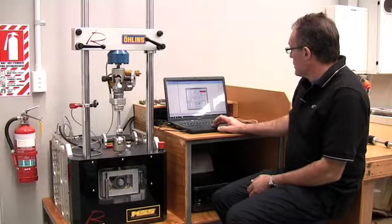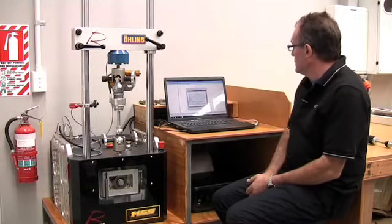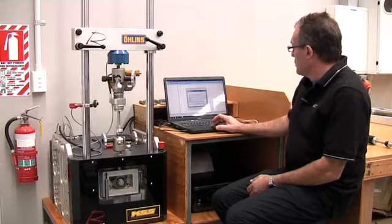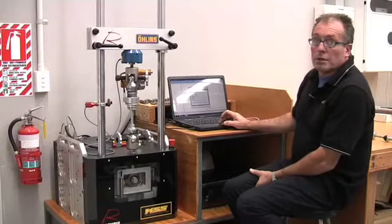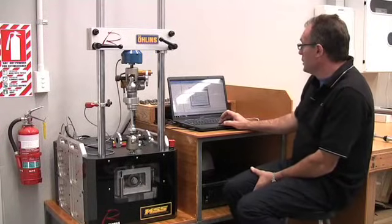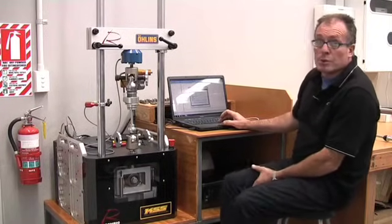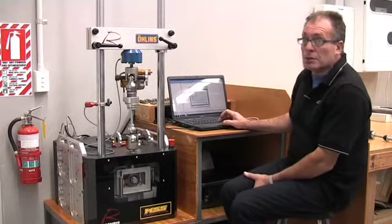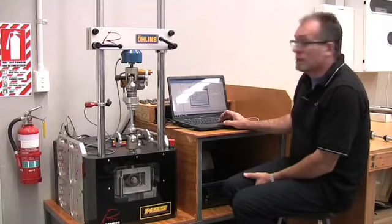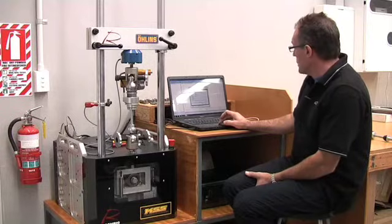So the next step is we hit start test, and it prompts us for data on the shock absorber, which I'll now enter. We have now entered the notes for this particular test run, the type of shock absorber that it is, the notes on valving, internal construction, and the clicker settings that we're going to dyno it at.